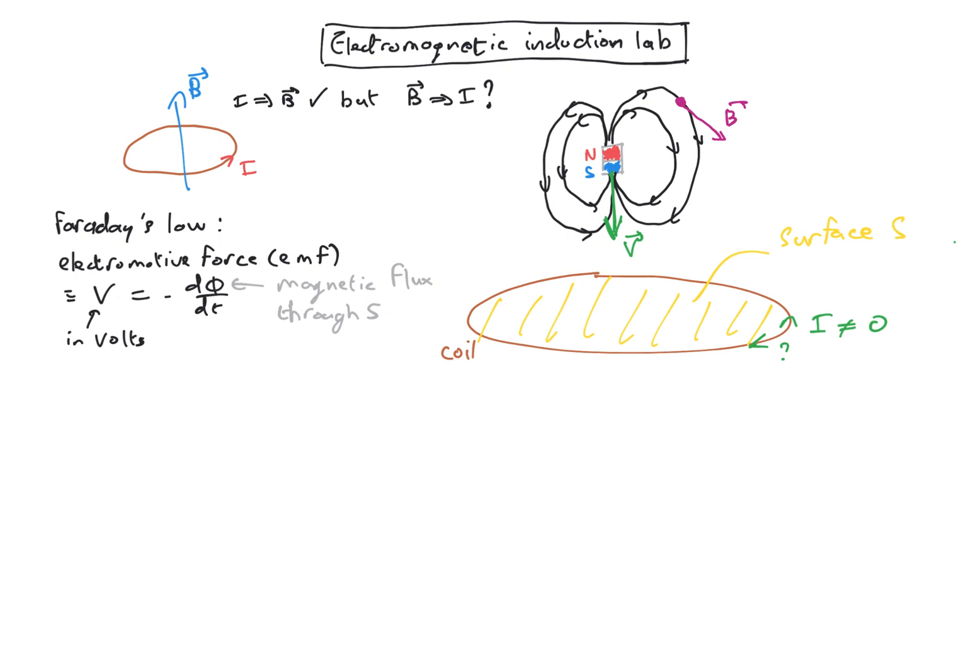Now in theory, if we assume that the magnet is a perfect dipole moment, we can work out what is the expression of the magnetic field in each point of space. And assuming that the magnet is perpendicular to the surface of the coil and also moving through the center of the coil, we can determine the expression for the flux.